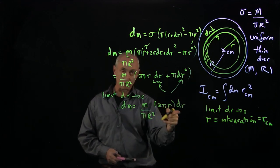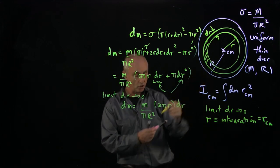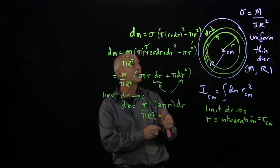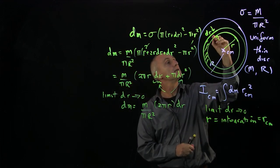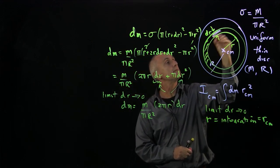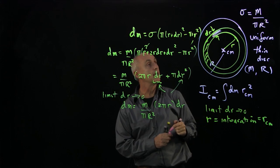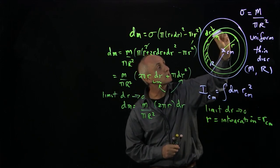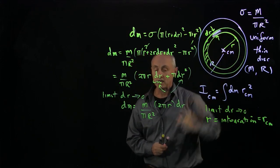Now let's think about this term, why it makes sense. Because when we're shrinking our ring, taking the limit as dr goes to 0, the ring just becomes an extremely thin ring at radius r.